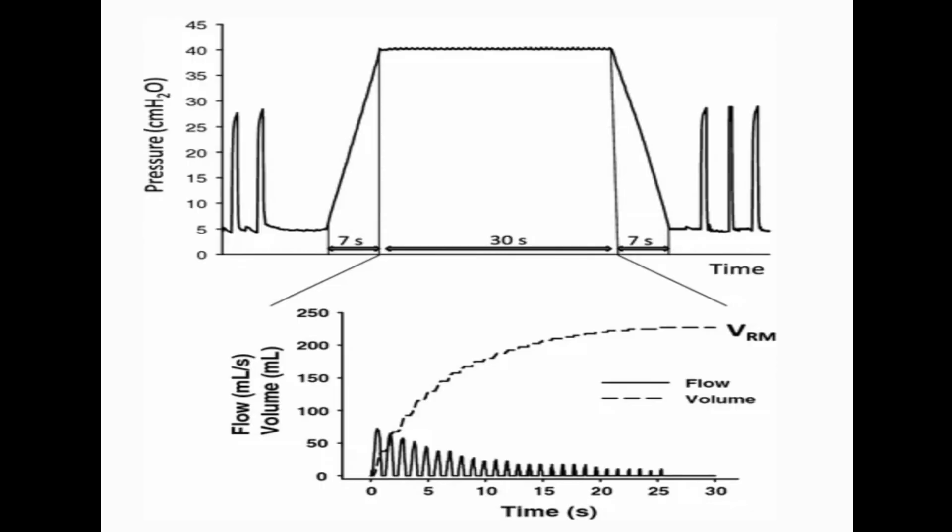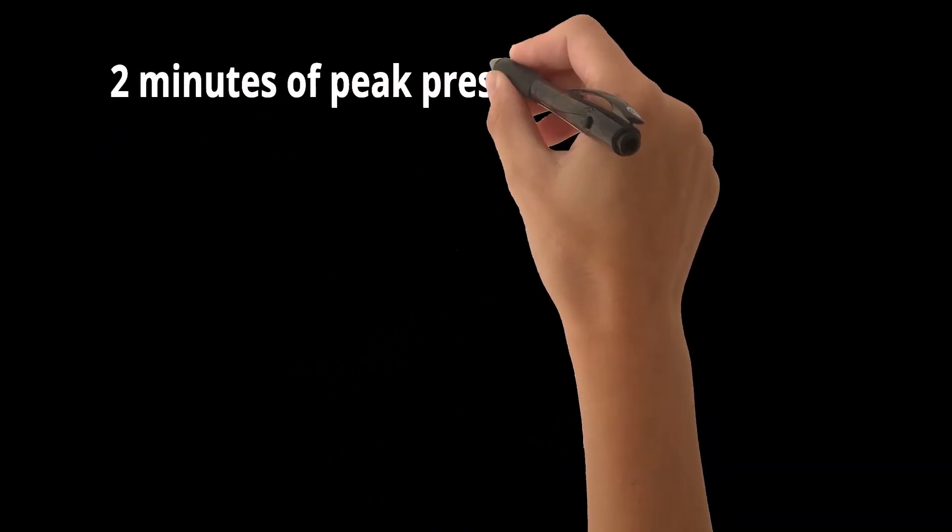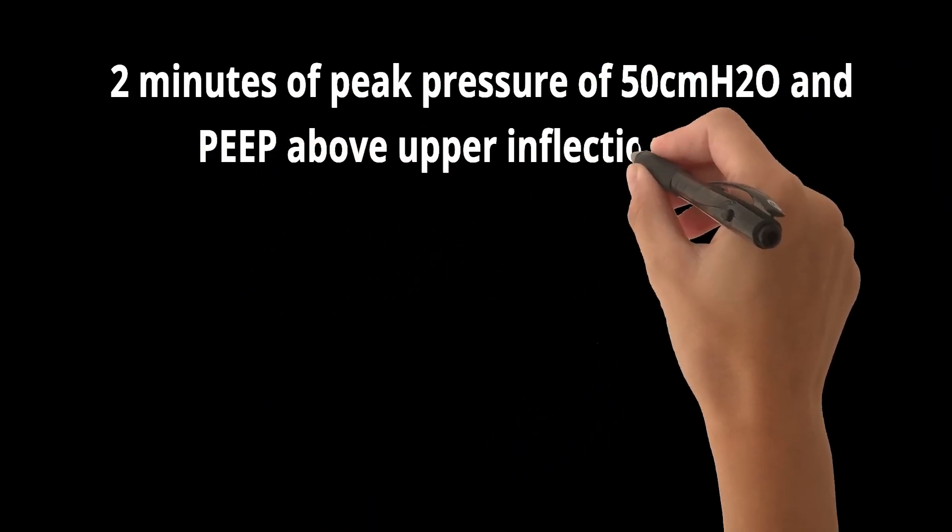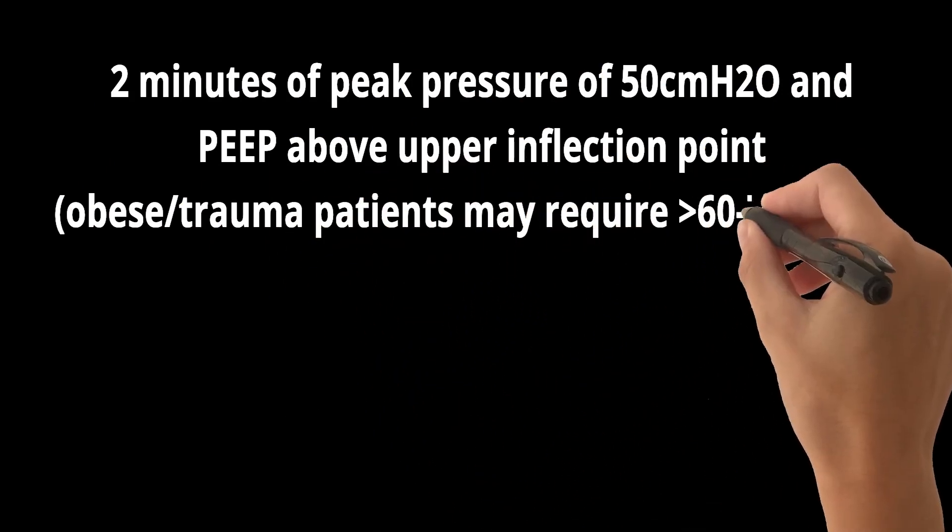Methods of recruitment are: 40 cm of water pressure for 30 seconds, 3 consecutive sighs per minute with a plateau pressure of 45 cm of water pressure, 2 minutes of peak pressure of 50 cm of water and PEEP above upper inflection point. Obese or trauma patients may require greater than 60-70 cm of water.